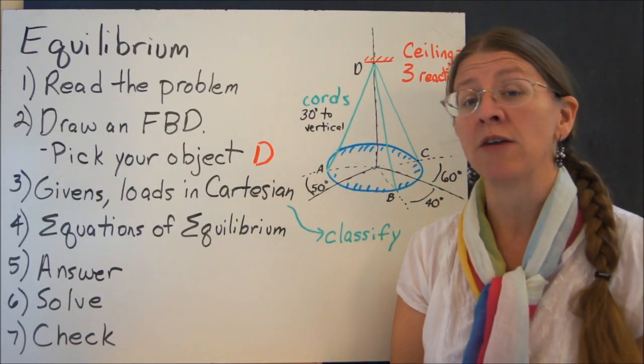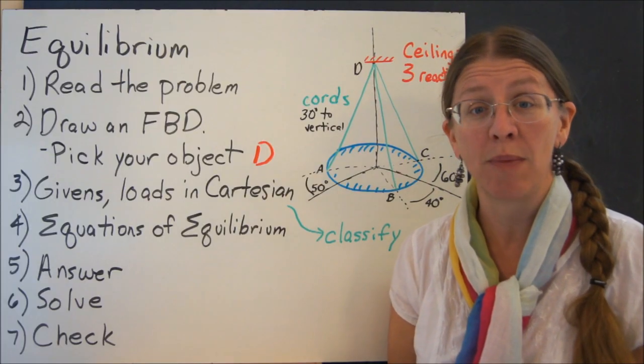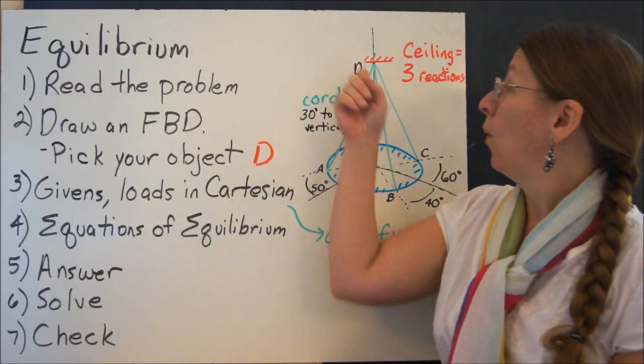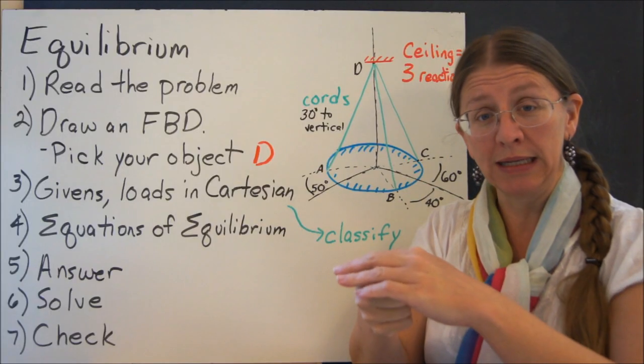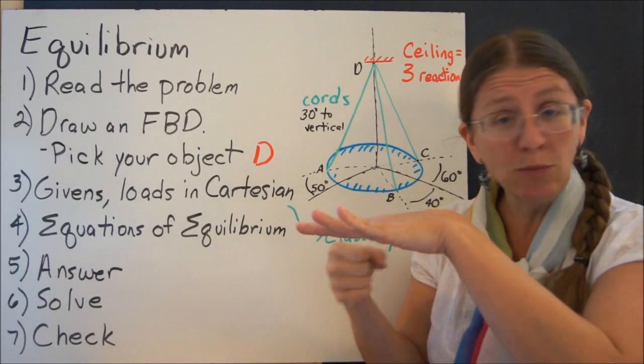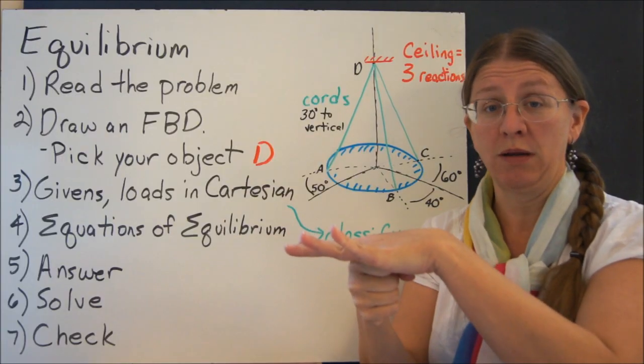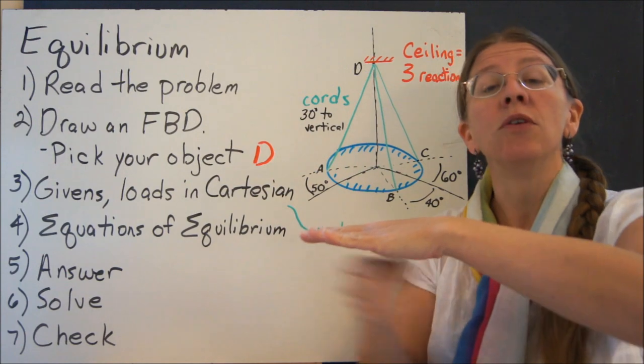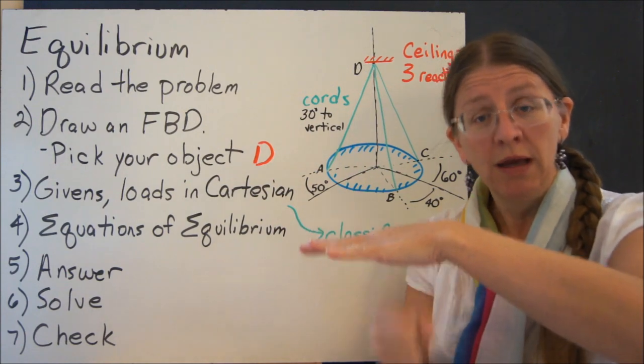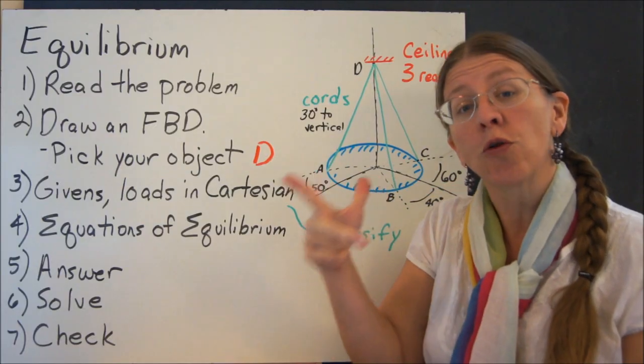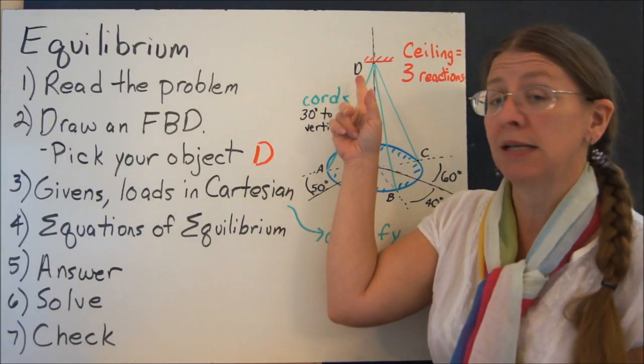When you draw that, you've got to ask yourself, how many forces exist on my free body diagram? You're going to have the three cords, it's true. But when you're looking at a ceiling, you've got a hook going into a ceiling. If it can't move this way, then you have a force, a reaction force in that way. If it can't move this way, then you have a reaction force this way. If it can't pull out of the ceiling, then you have a reaction force that way. So you're going to have all three reaction forces up at that ceiling.